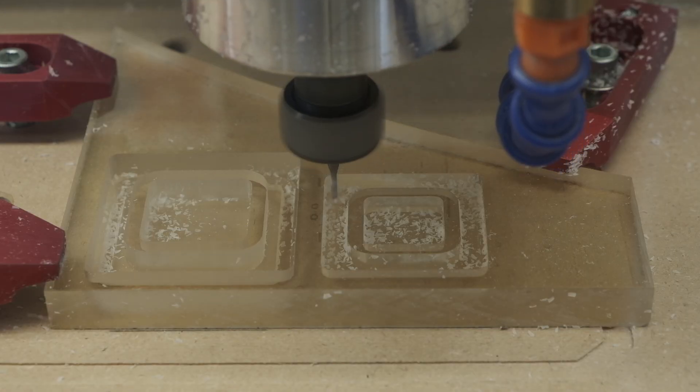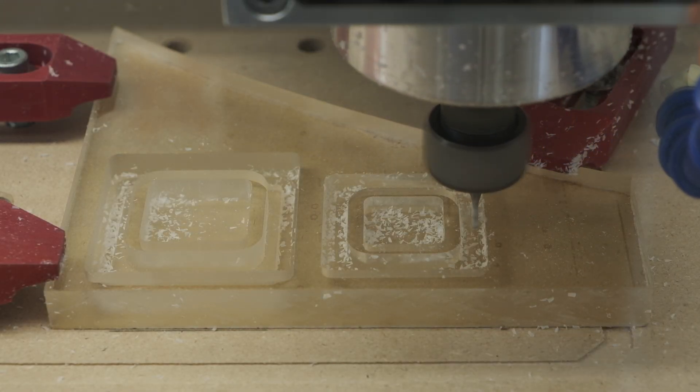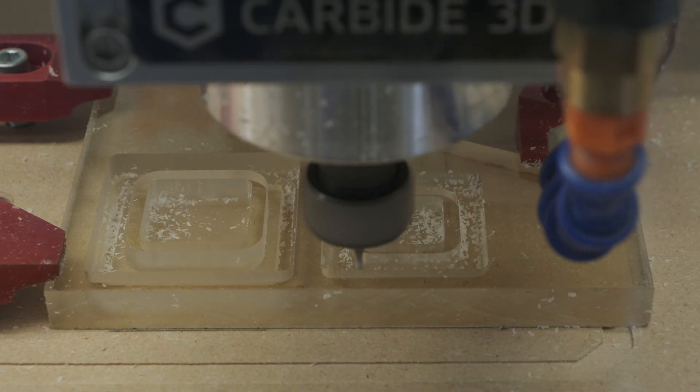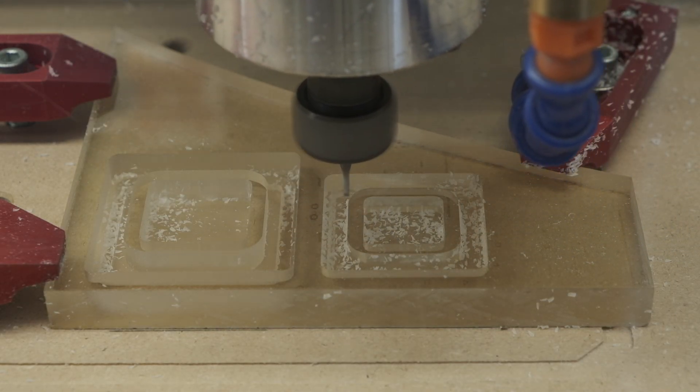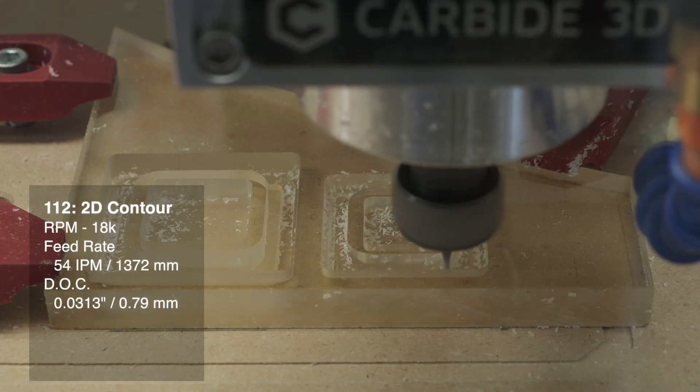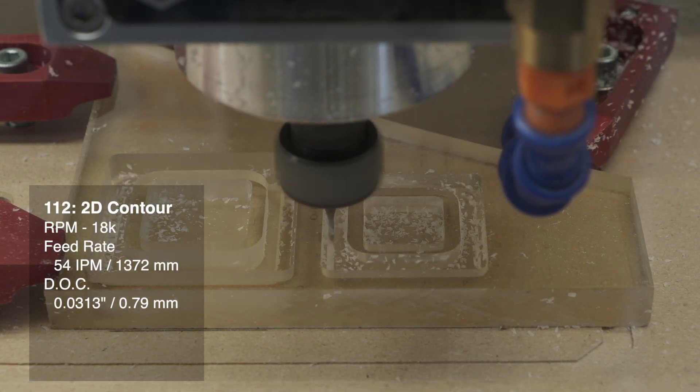In a slotting application or full width of cut contour, I like to back off a little because of the increased wall contact and compromised chip evacuation. 18,000 RPM, 54 inches per minute, and a 0.032 inch depth of cut.